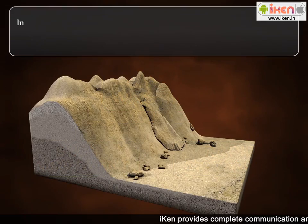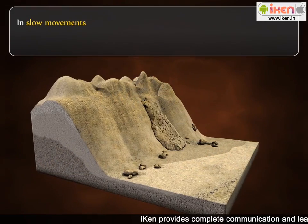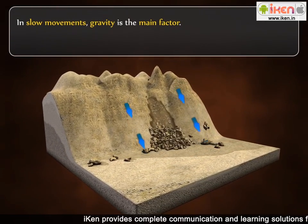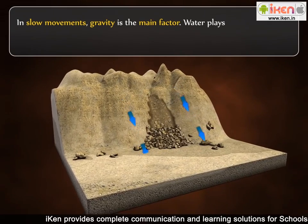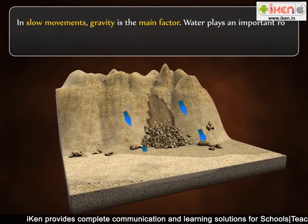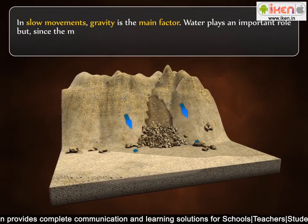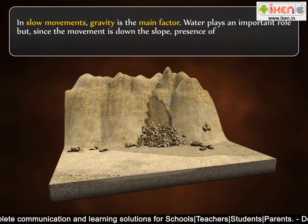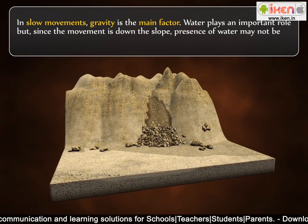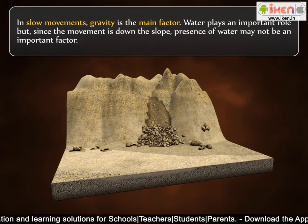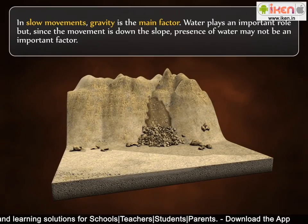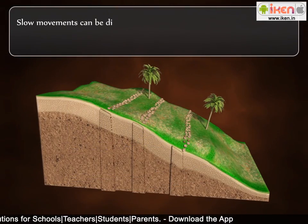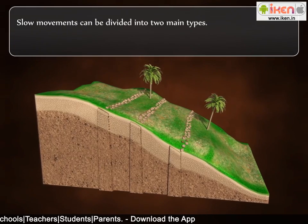In slow movements, gravity is the main factor. Water plays an important role, but since the movement is down the slope, presence of water may not be an important factor. Slow movements can be divided into two main types.